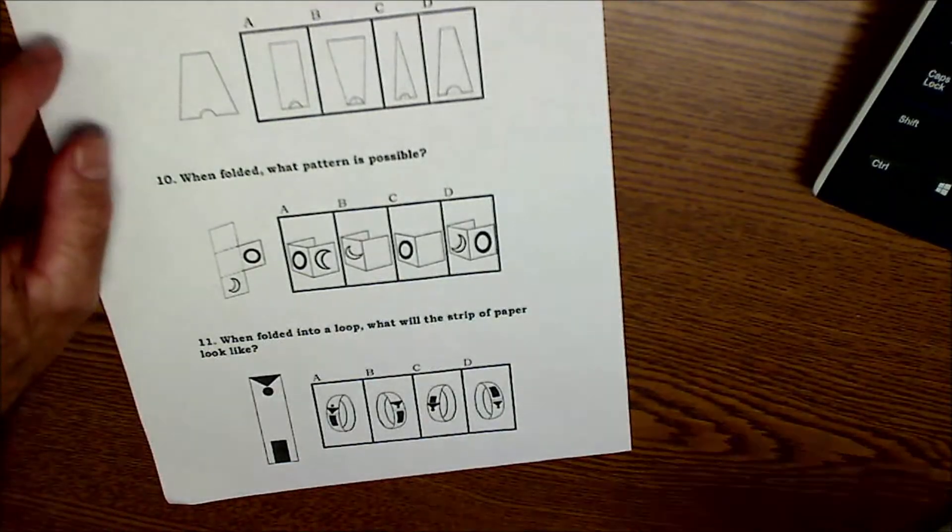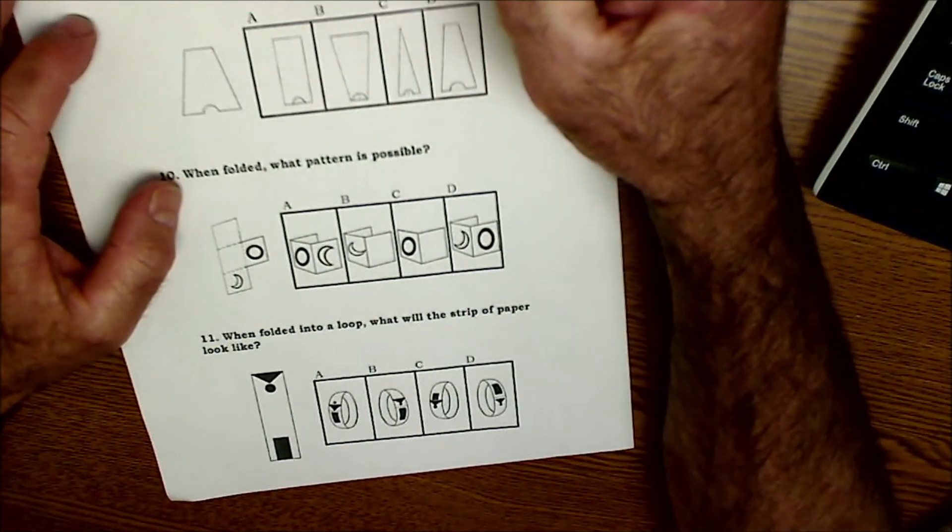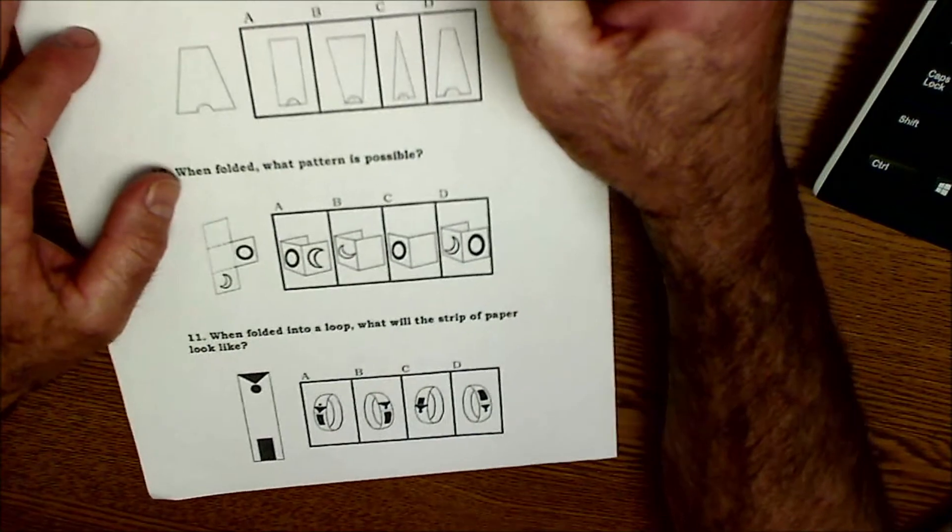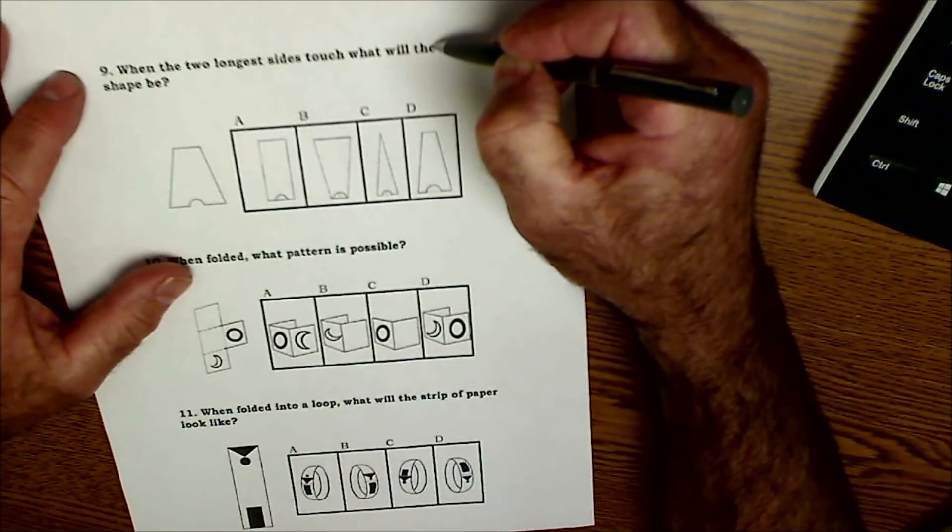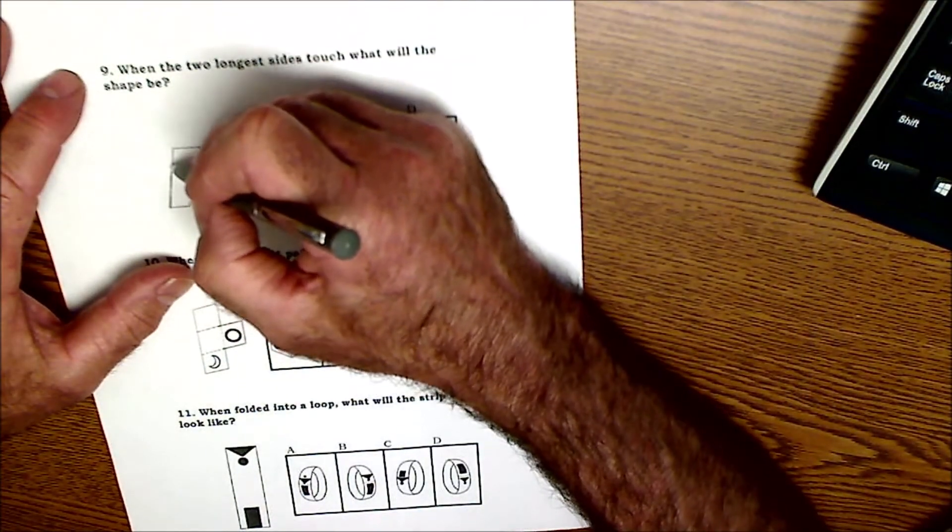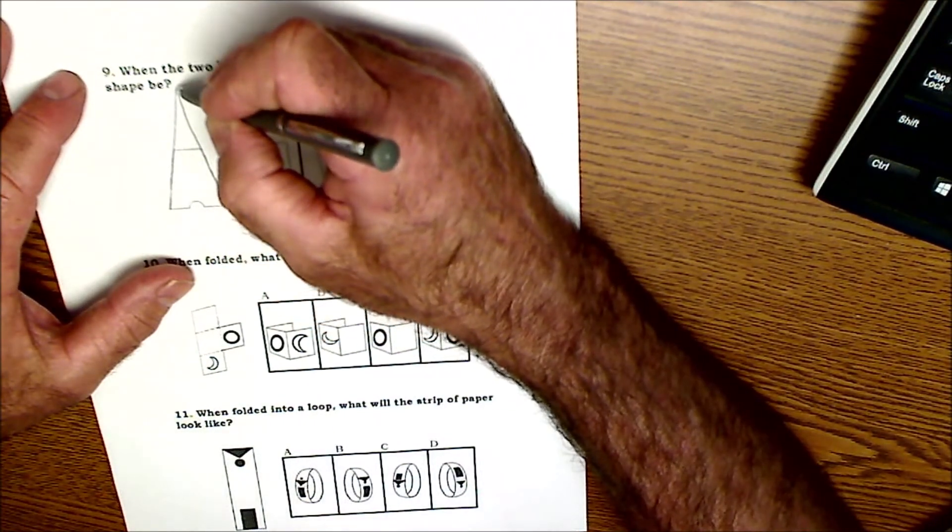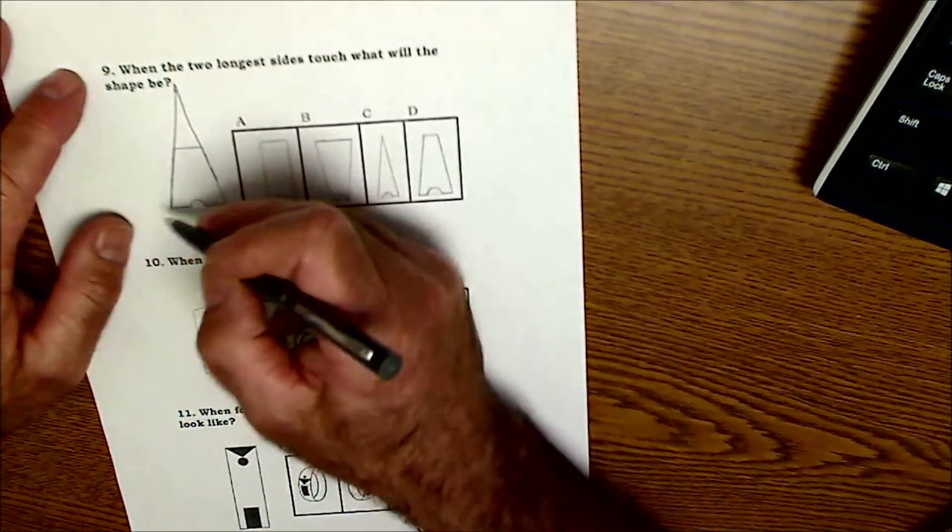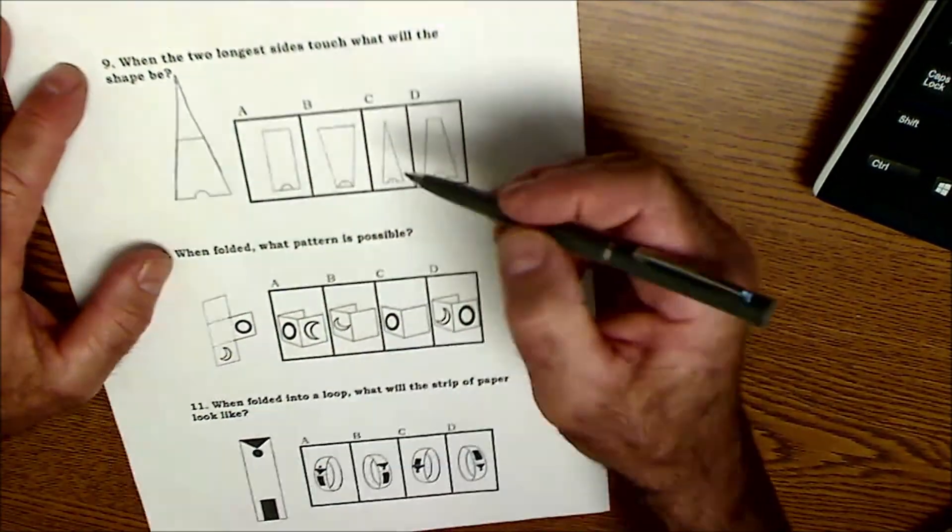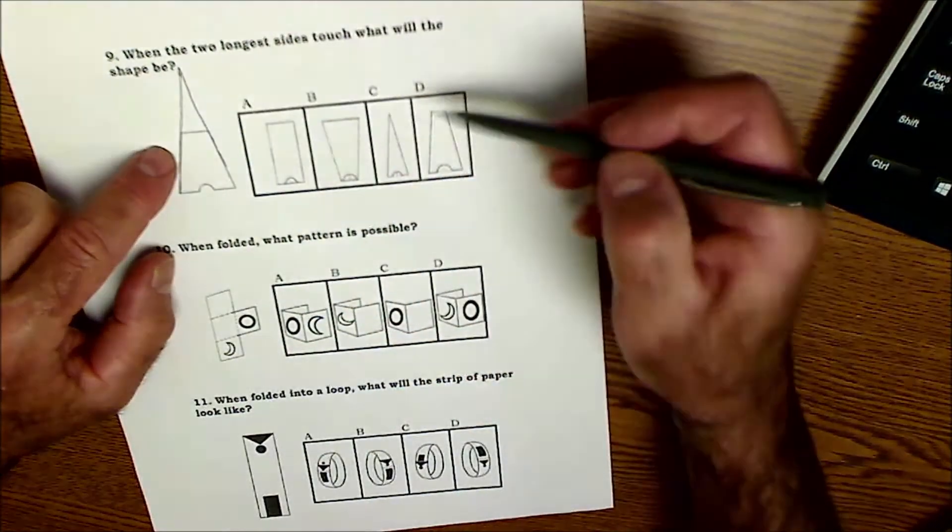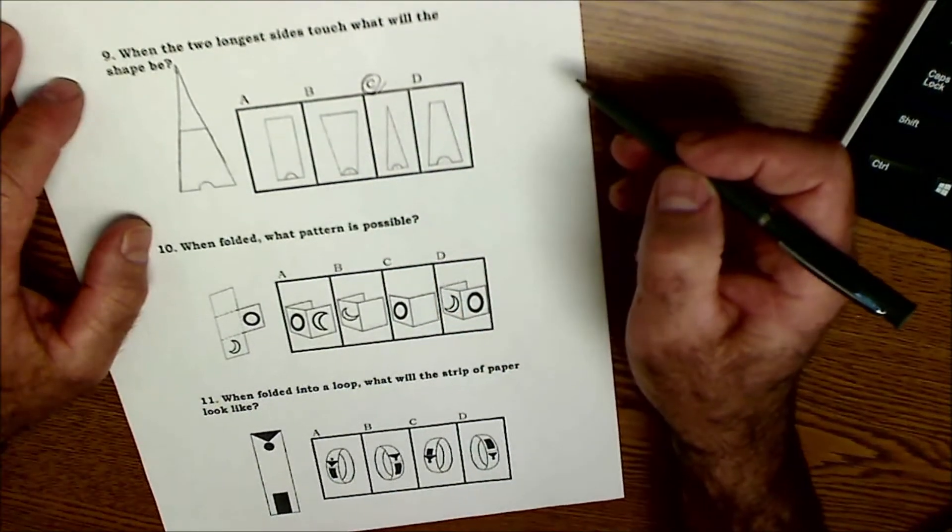On number 9, when the two longest sides touch, what will the shape be? So these are the longest sides. And they would keep going up and keep going up. They would eventually converge. These would keep going away. So the only place they're going to converge is at a point. So this has to be C.